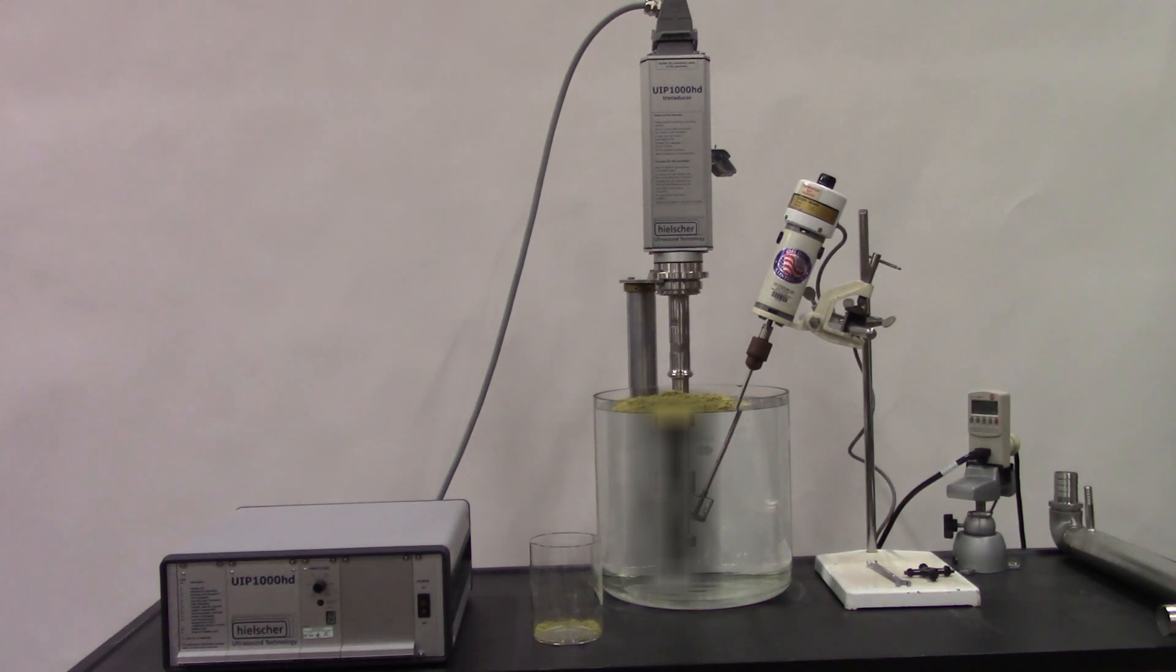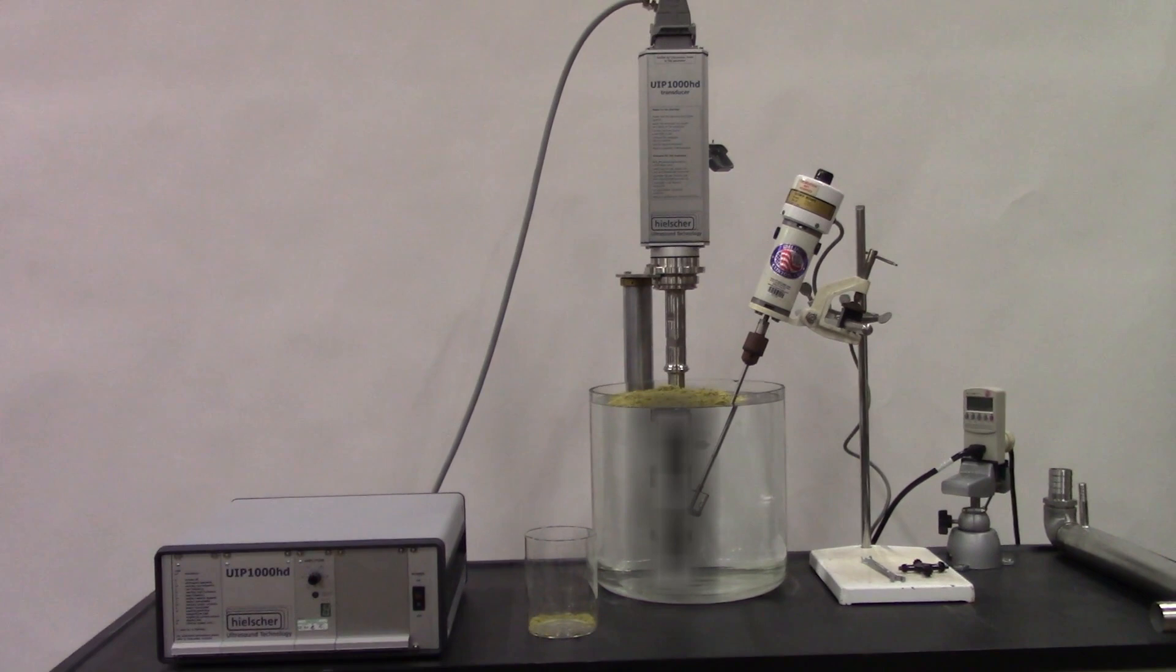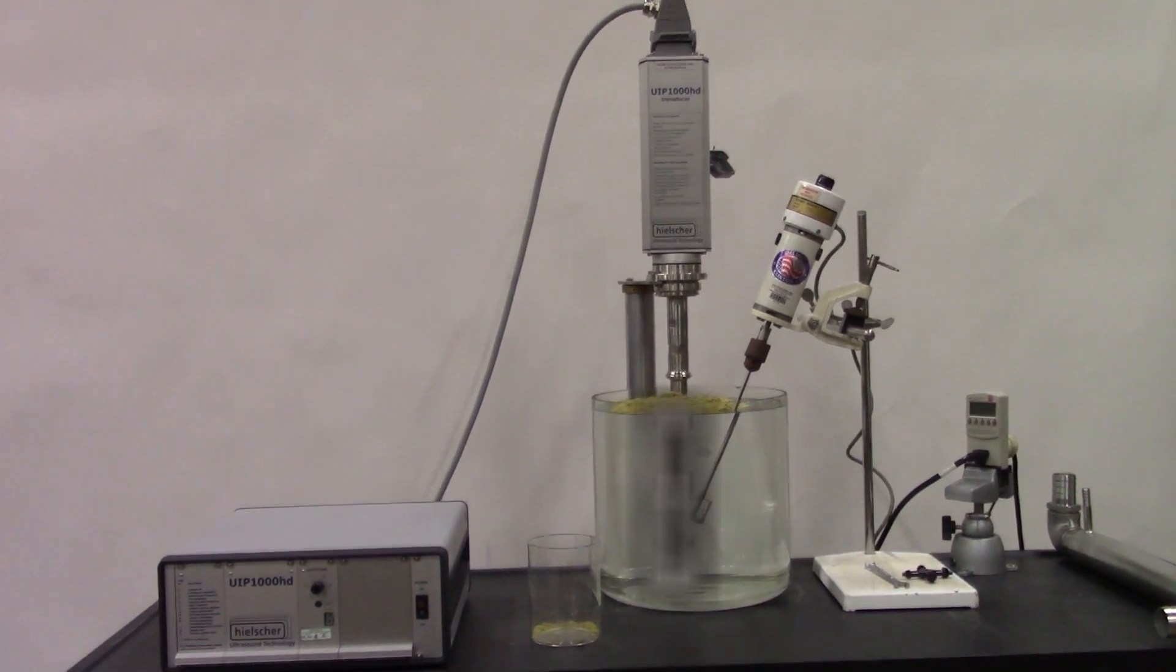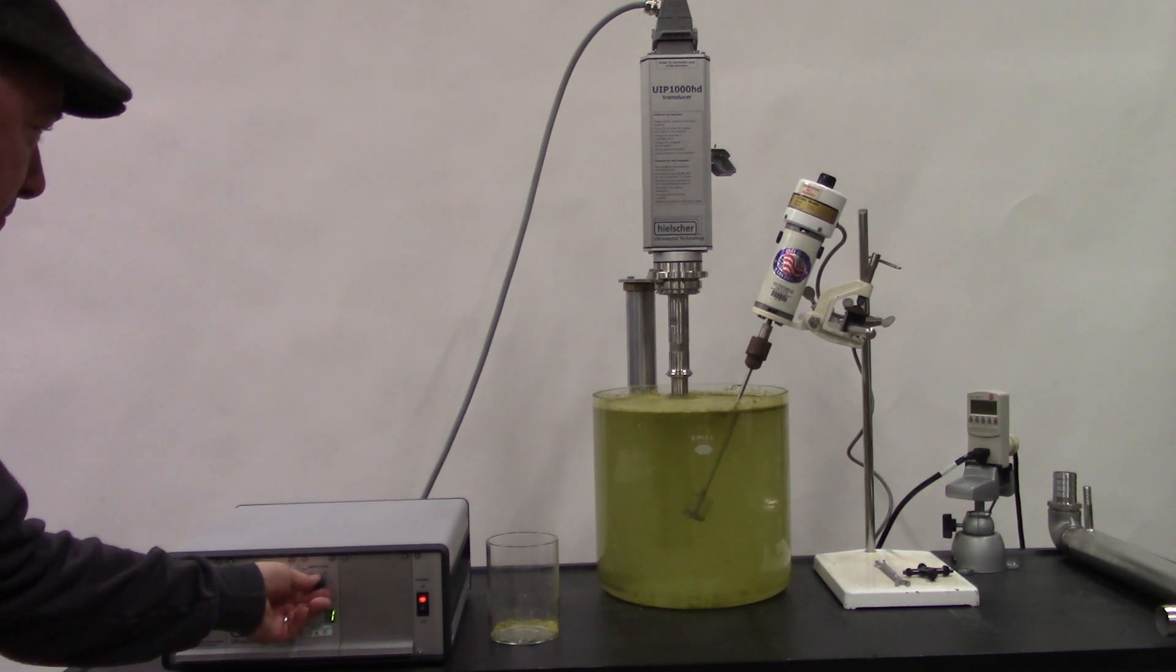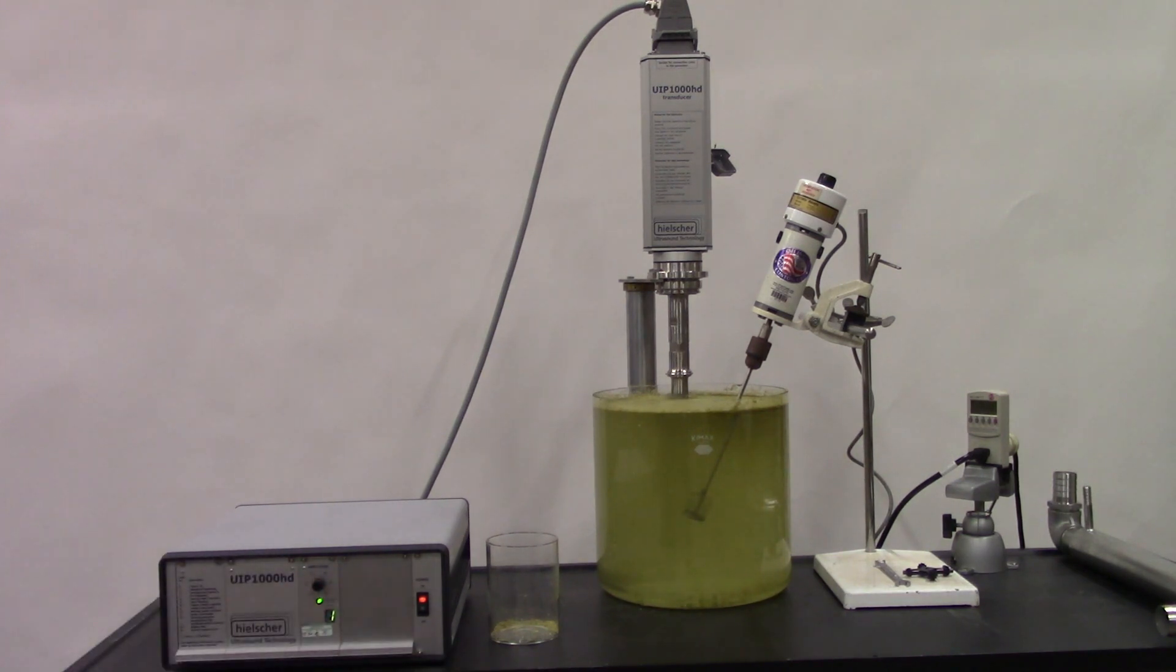We'll also have an overhead mixer to help disperse the hops particles within our reservoir. Next, we'll be turning on the UIP-1000 HD. This is a 1,000-watt unit, and it is excellent for ultrasonic extraction.